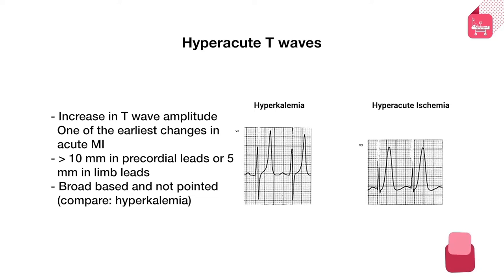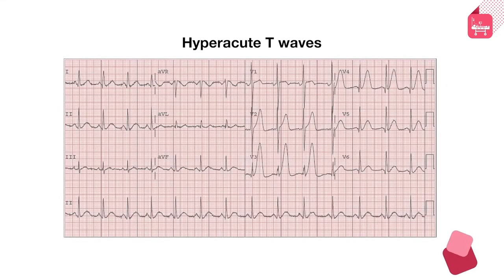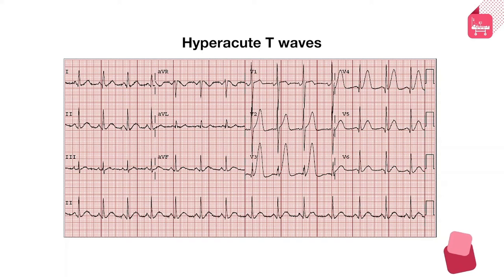The general criterion to diagnose a hyperacute T wave is a T wave exceeding at least 10 mm in precordial leads or 5 mm in limb leads. Here is an example from a person who walked into the ER with chest discomfort starting 15 minutes prior. At first look one may think there is no ST elevation and everything looks fine, but from leads V2 to V4 there are very abnormally tall hyperacute T waves representing impending anterior wall MI.